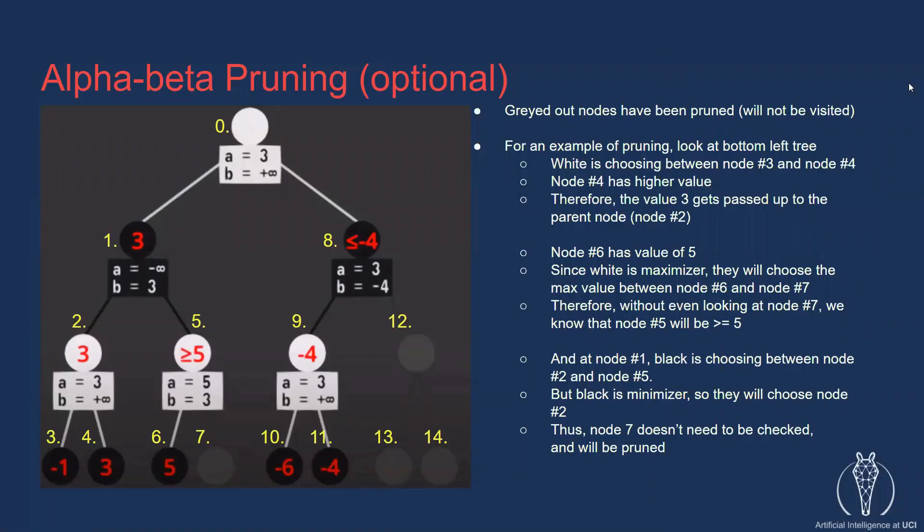The code that we currently have technically already works, but it can be improved using alpha beta pruning. Alpha beta pruning is a pretty complicated concept, so I won't go into too much depth here. All you need to know about it for now is that it greatly improves the performance of the minimax algorithm by avoiding going down unnecessary branches of the tree. There's an excellent video on alpha beta pruning by Sebastian Log that I will link in the description.